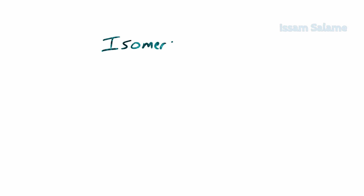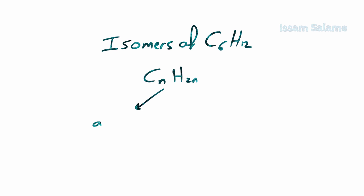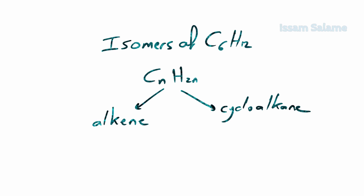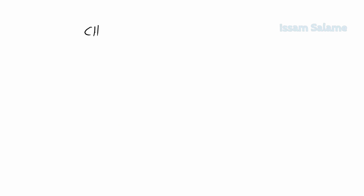To draw all the possible structures for C6H12, we should take into consideration that it applies the general formula CnH2n, so it can be an alkene or it can be a cycloalkane. I'm going to draw all the possible structures for alkenes and cycloalkanes with the general formula C6H12. I will start by drawing six carbon atom chain alkenes.